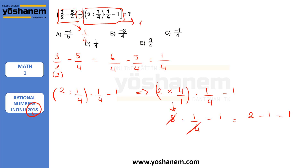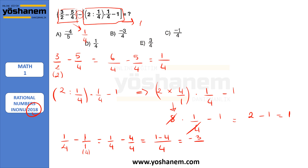At the end, I have 1 over 4 minus 1. I can write 1 as 1 over 1 as a fraction. So I need common denominators again — multiply 1 over 1 by 4 to get 4 over 4. That gives 1 over 4 minus 4 over 4, which is 1 minus 4 over 4, equal to negative 3 over 4. That is my answer, which is B.